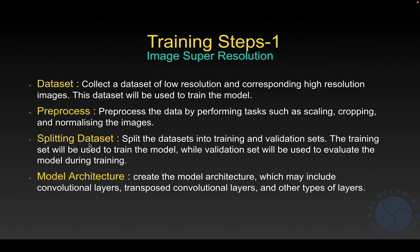That covers the training steps for image super resolution. The training pipeline is essentially the same as other deep learning models — the key difference is that the dataset must contain two types: low resolution images and high resolution images. We can also decrease image quality by a factor of four dynamically during training. We'll see the practical part in the next video.